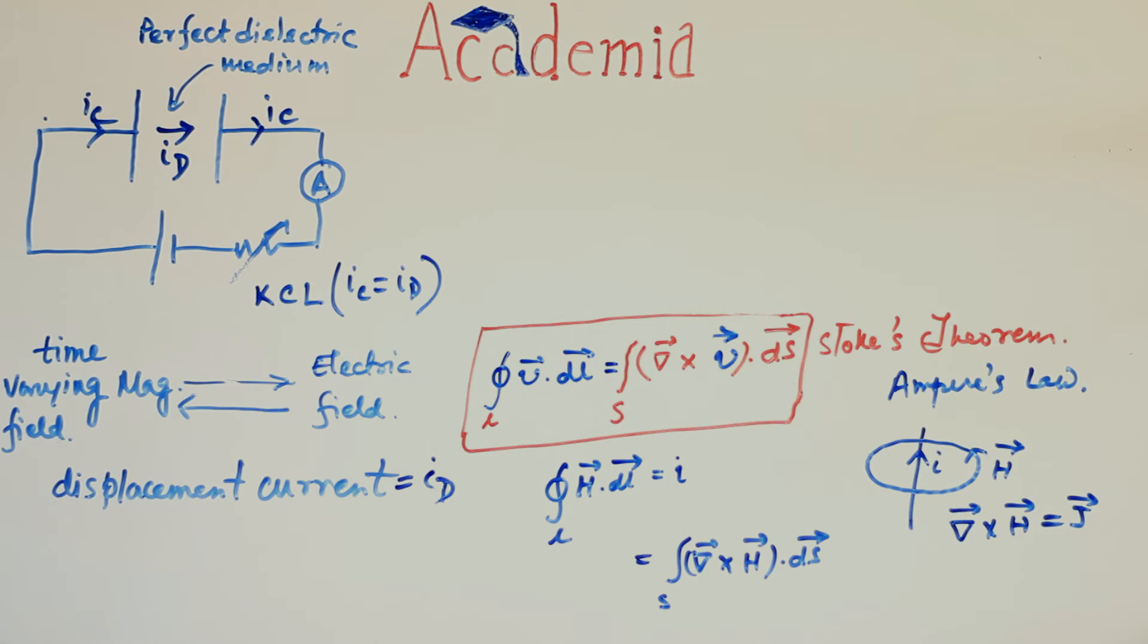Ampere said a steady electric current can produce a steady magnetic field around it. The steady electric current in this case being conduction current IC. So existence of magnetic field near a current carrying wire suggests that conduction current is present in the wire.